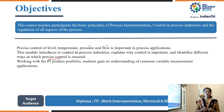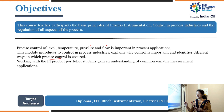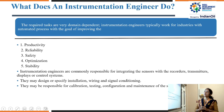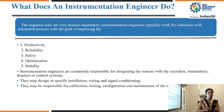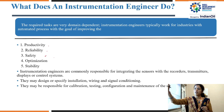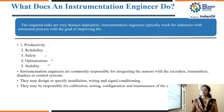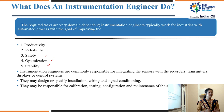This course introduces control in process industries, explaining why control is important and identifying different ways precise control is achieved. Working with the PI product portfolio, students gain understanding of common variable measurement applications. Instrumentation engineers typically work for industries with automated processes, with the goal of improving control systems for productivity, reliability, safety, optimization, and stability. They are responsible for integrating sensors with recorders, transmitters, displays, or control systems, and may design or specify installation, wiring, and signal conditioning.